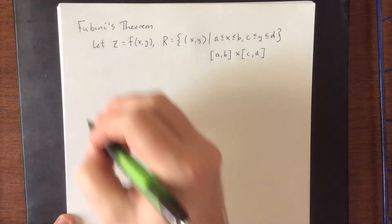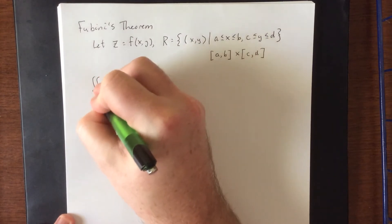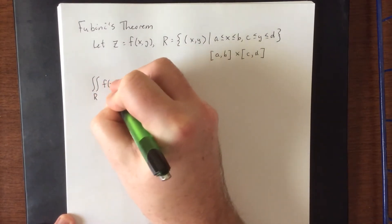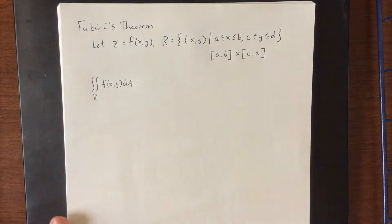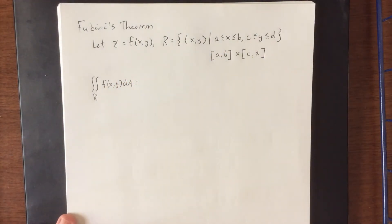Fubini's theorem states that if you want to evaluate the double integral over the rectangle R of f(x,y) dA, you are allowed to do that in one of two different ways.